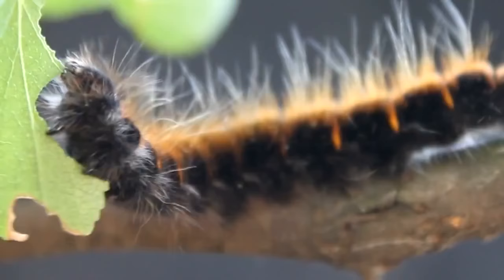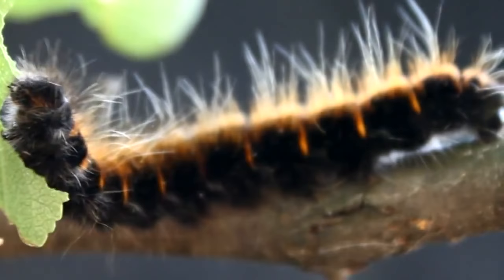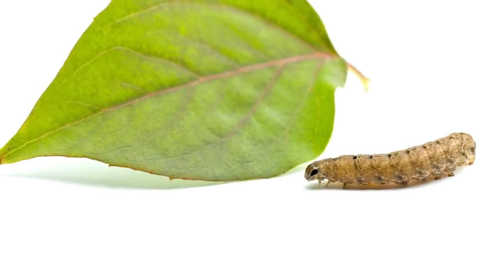Once inside the animal, these lectin proteins cause a range of harmful symptoms, from gastrointestinal discomfort to nerve damage or even death, thereby deterring the hungry predator from eating the plant.